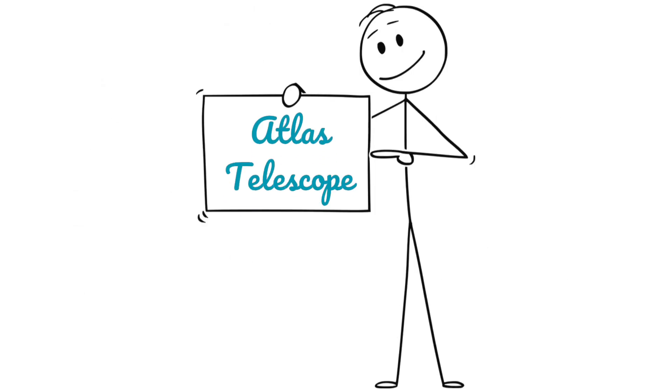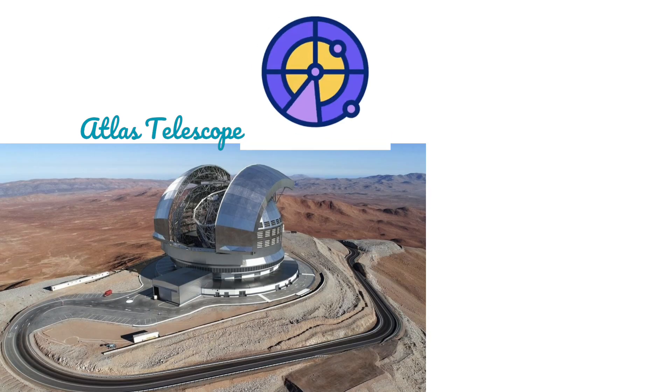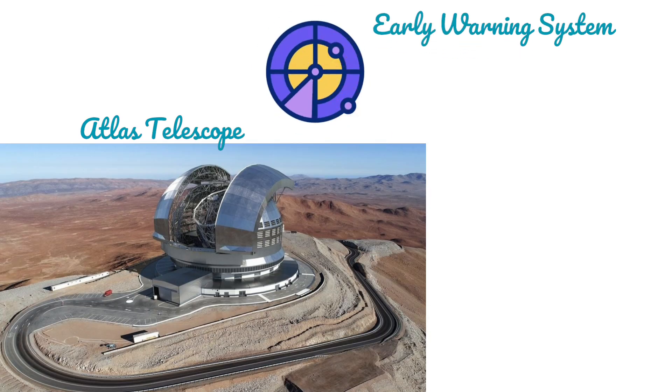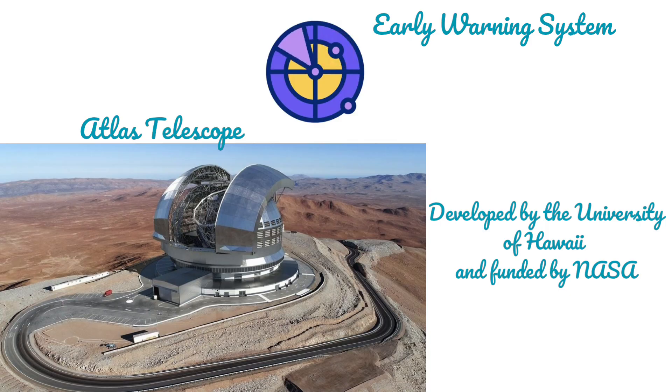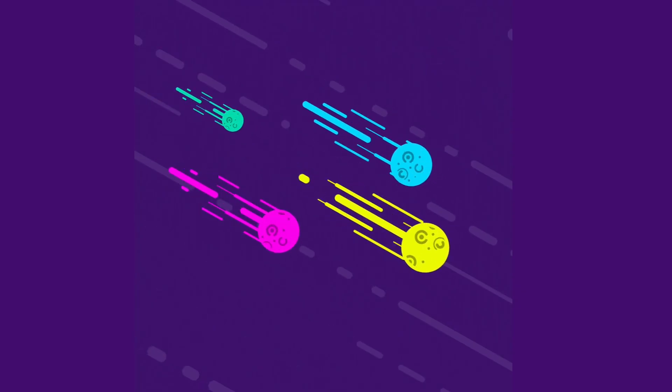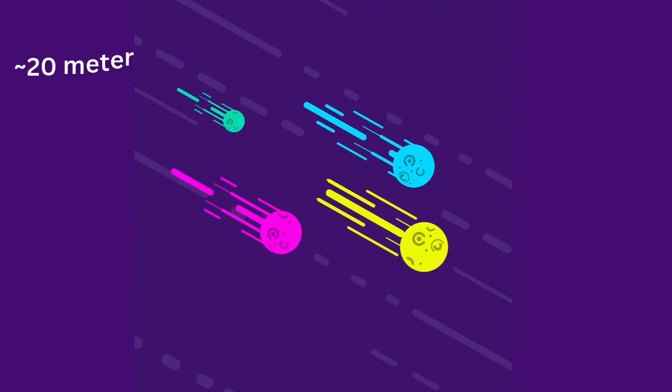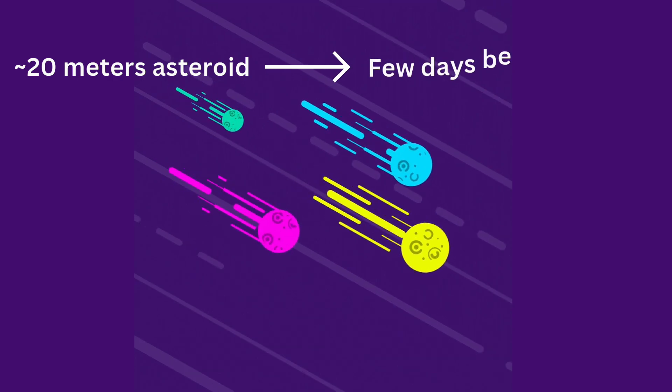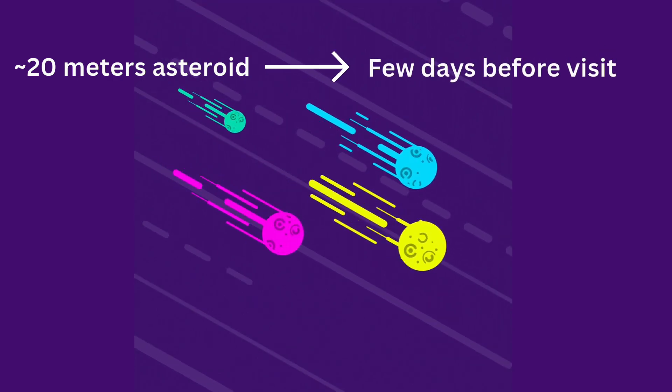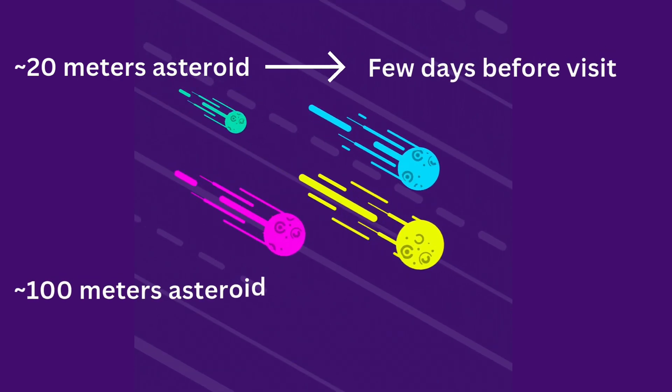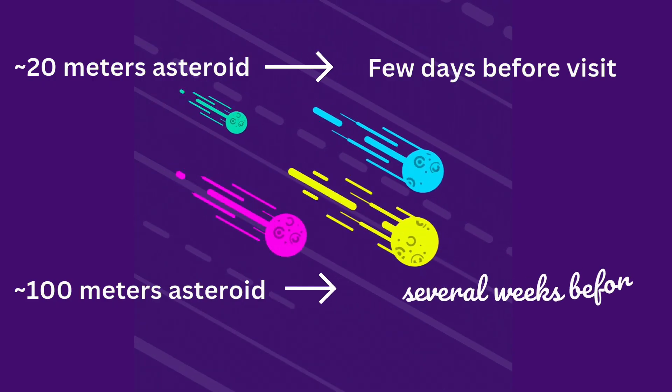About the Atlas Telescope. Atlas is basically an early warning system for Earth. Developed by the University of Hawaii and funded by NASA. If there's a small asteroid about 20 meters wide, Atlas can warn us a few days before it visits. If it's a big one, around 100 meters, we get a few weeks to panic.